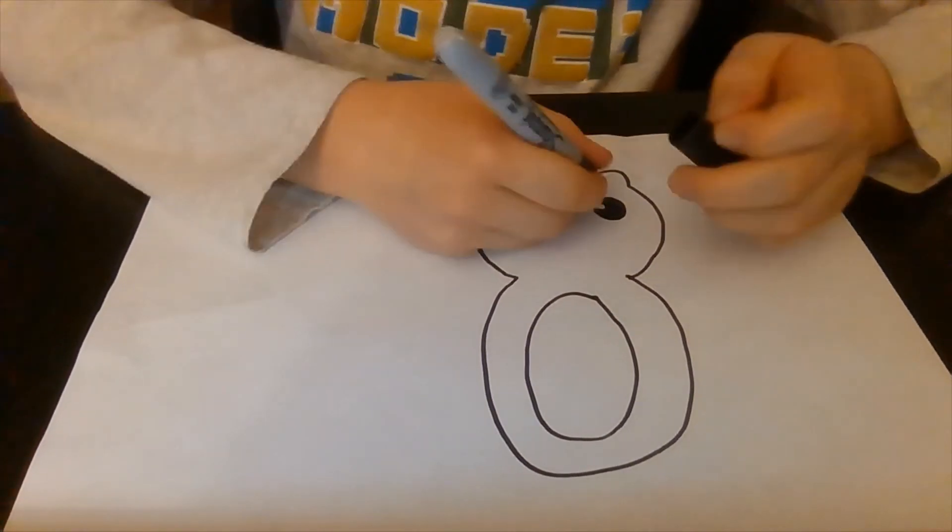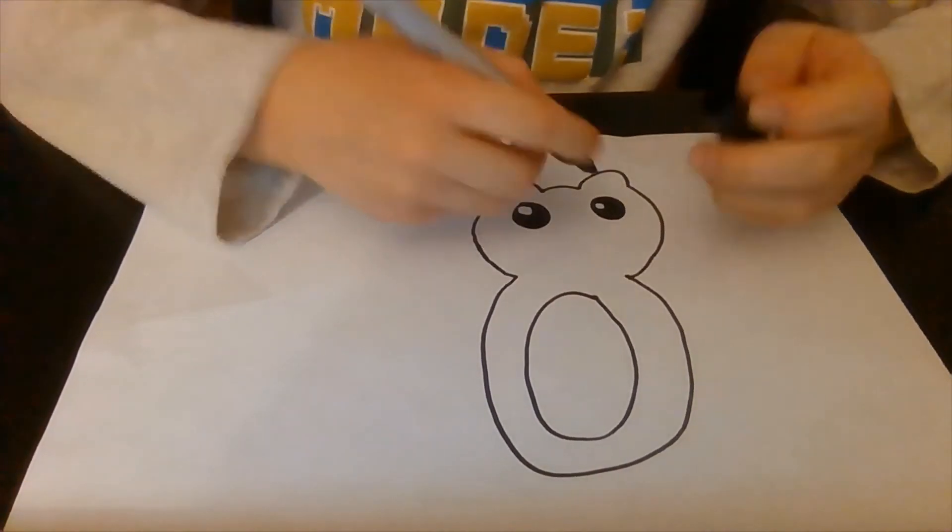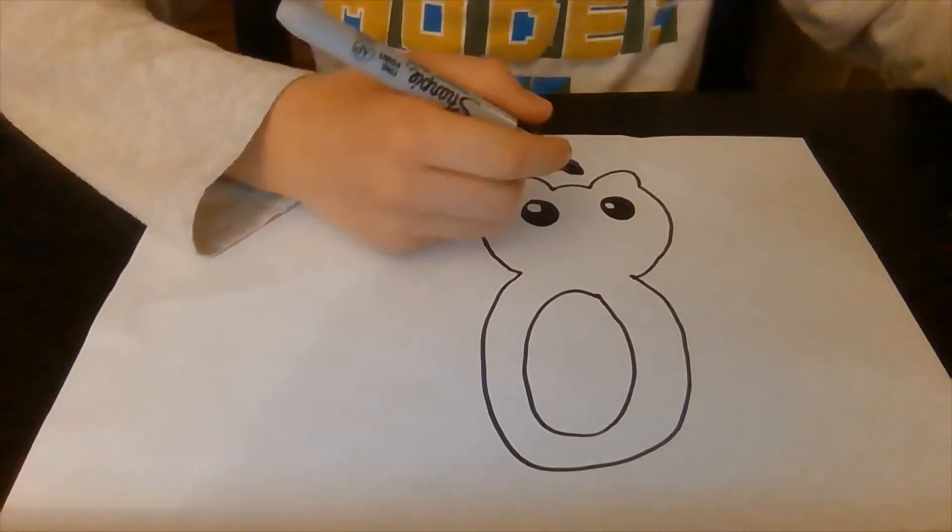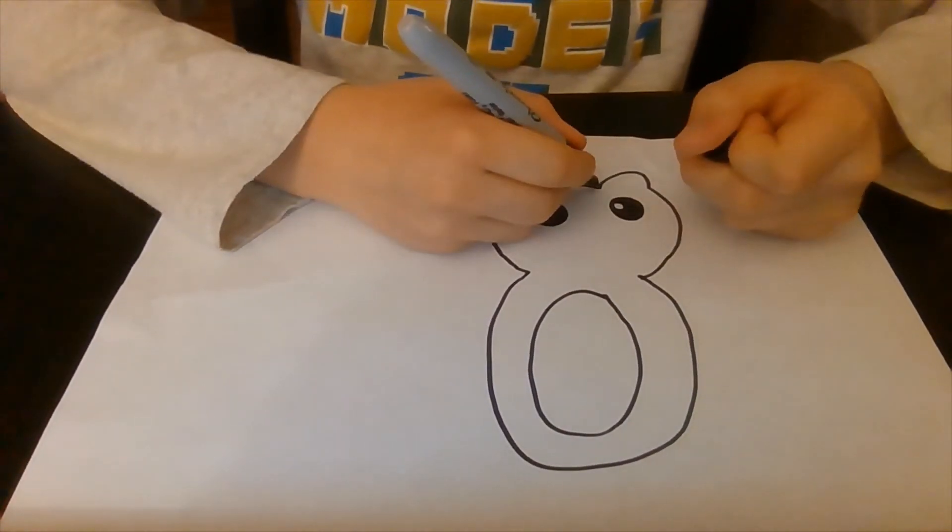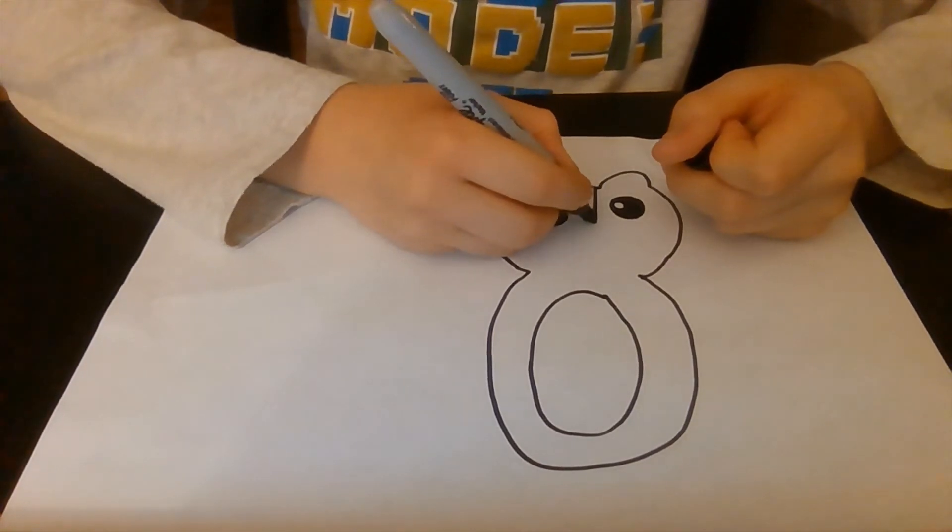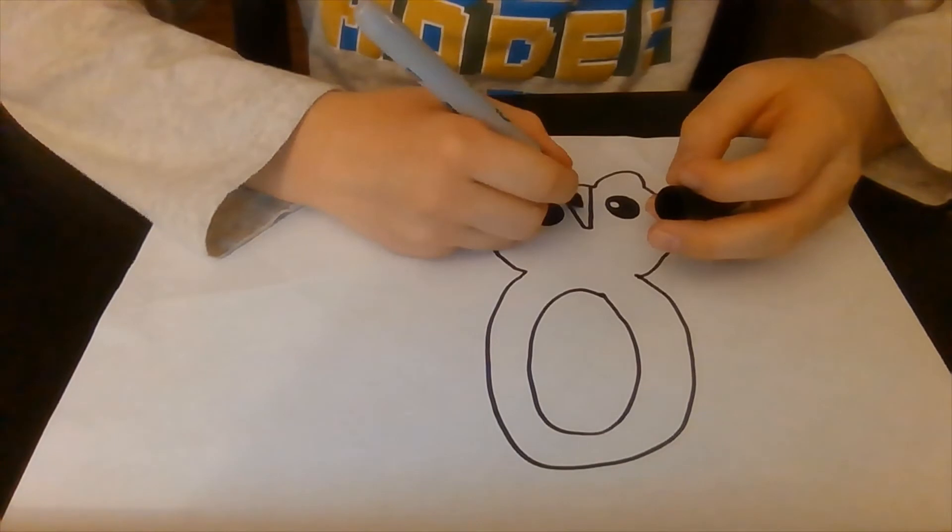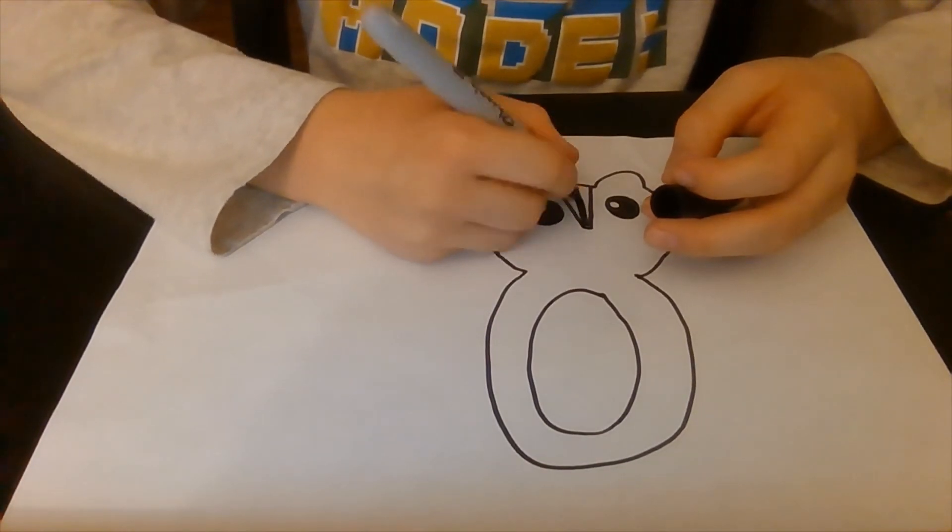And then, you know how chipmunks kind of have these little stripes? Don't unplug that. Chipmunks have some little stripes and we're going to draw a little thing right there, and a little thing right through it like that. Tell me when you got that, okay?